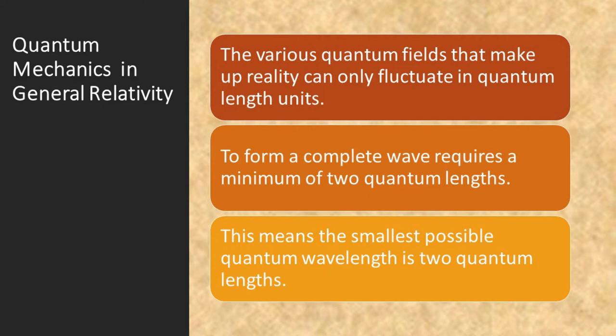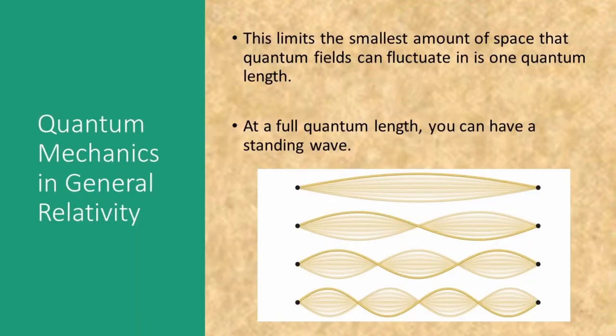To form a complete wave requires a minimum of two quantum lengths. This means the smallest possible wavelength is two quantum lengths. This limits the smallest amount of space that quantum fields can fluctuate in to one quantum length. At a full quantum length, you can have a standing wave.